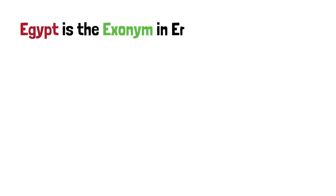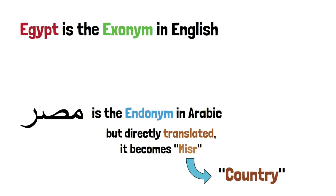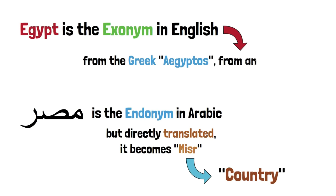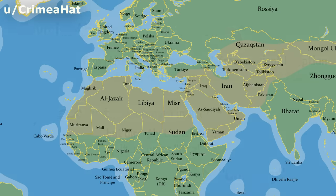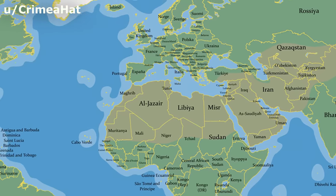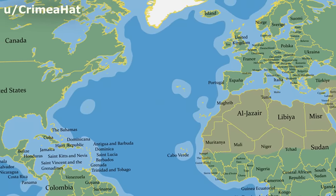Egypt's endonym is Misr in Arabic, and in English it's Egypt. But if you directly translate its endonym to English, it is Misr — an Arabic name simply meaning 'country.' While Egypt comes from the Greek Aegyptos, which was the Greek pronunciation of the ancient Egyptian name Utkaptah, meaning 'mansion of the spirit Ptah.' The Greek exonym for Egypt at the time was just a direct translation of its endonym. But while the endonym changed in the meantime, the exonym remained the same.